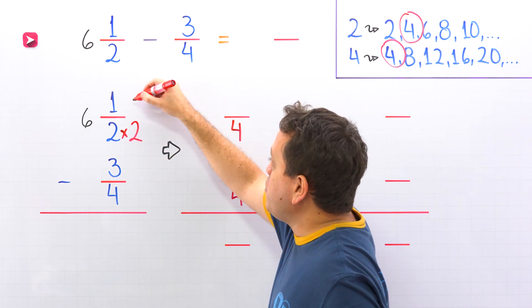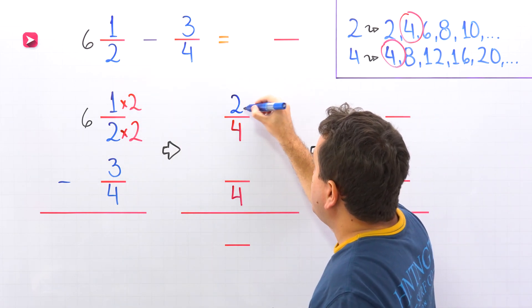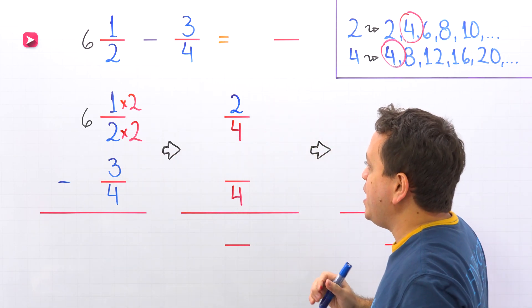Whatever we do to the bottom, we must do to the top. And 1 times 2 give us 2. Don't forget that 1/2 and 2/4 are equivalent fractions. They represent the same value.